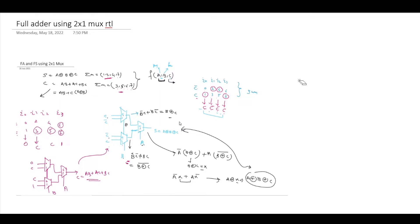How to implement a full adder and full subtractor using a 2x1 multiplexer I have explained in one of my previous videos. I will put the link in the description. Before proceeding to this RTL concept, if you watch that video first it will be good for you — you can understand the concept and then try to implement the hardware or the RTL for it.